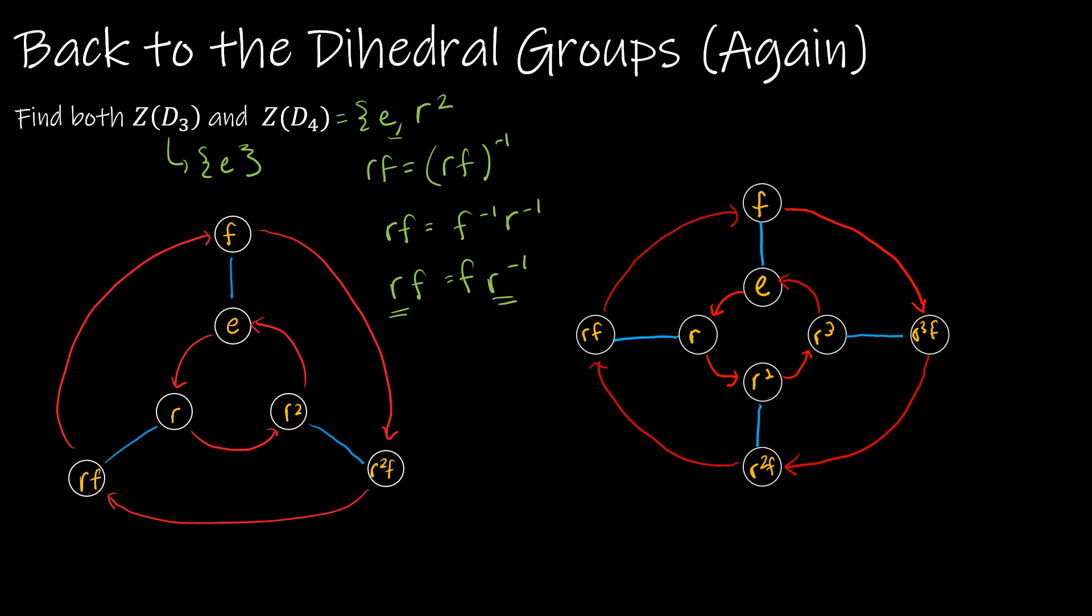But what about for D4? What about R squared? Does it make sense that R squared would be the same as R squared inverse? So if I do R squared, is that the same as moving twice in the opposite direction? Yes, it is. So let's just test it and make sure that works. If I take F·R squared, would that be the same as R squared·F? So let's start at E. F would take me to F, and then R squared would take me to R squared F. Start at E, do R squared, and then F. Did it also take me to R squared F? Yes, it did. Now, we can check it against all of the elements, but in fact, this is going to work because R squared is its own inverse.